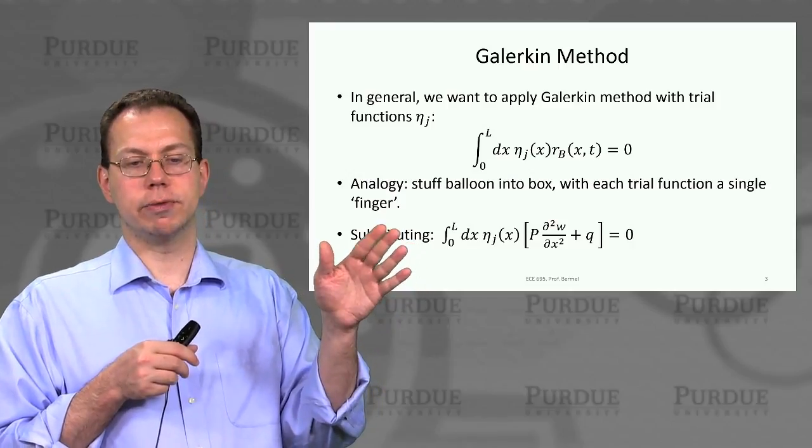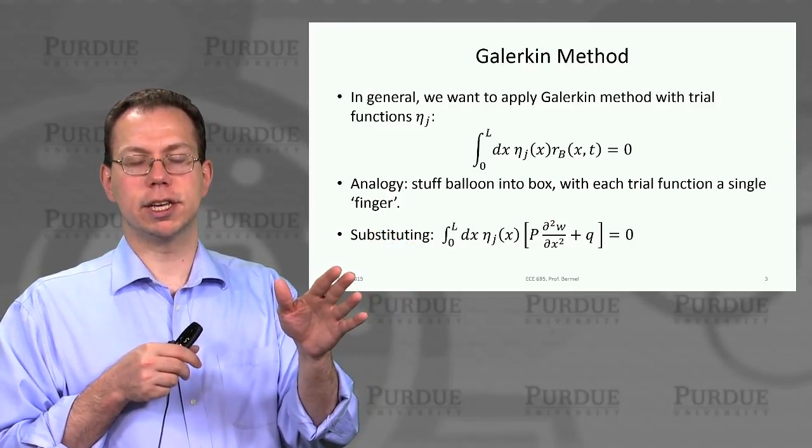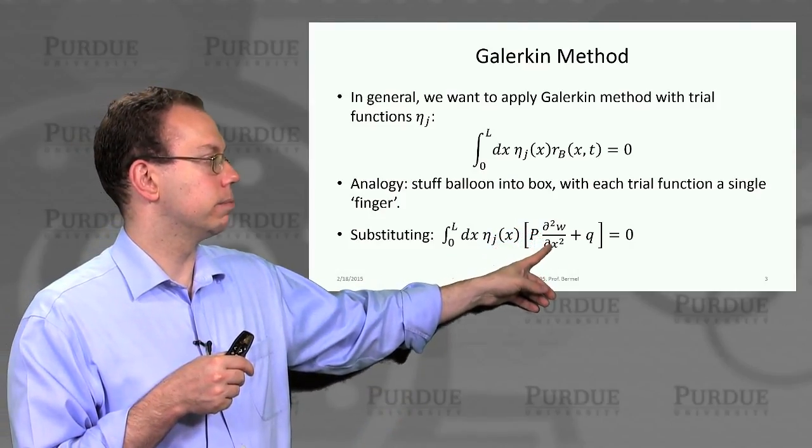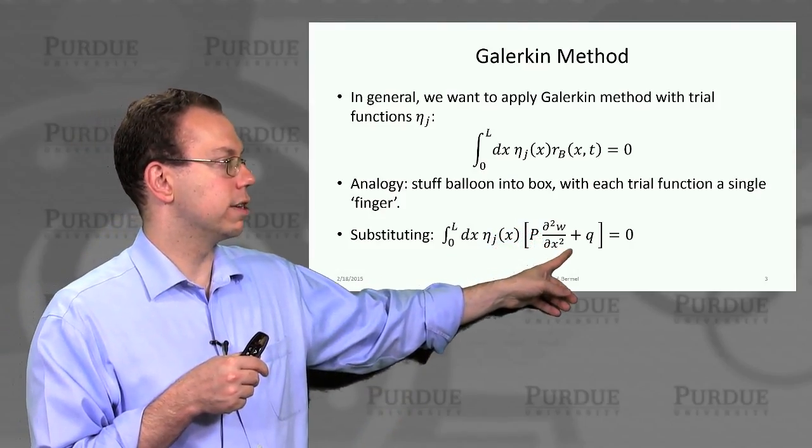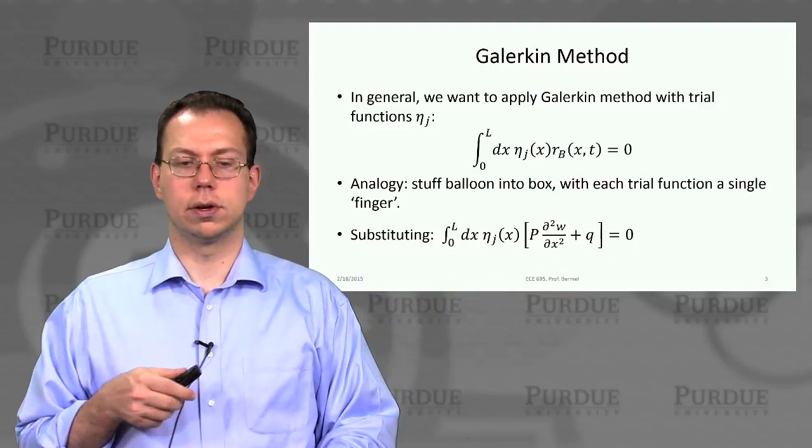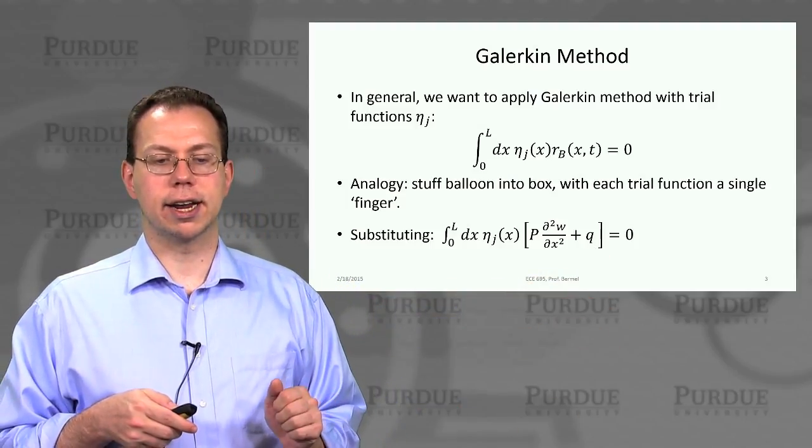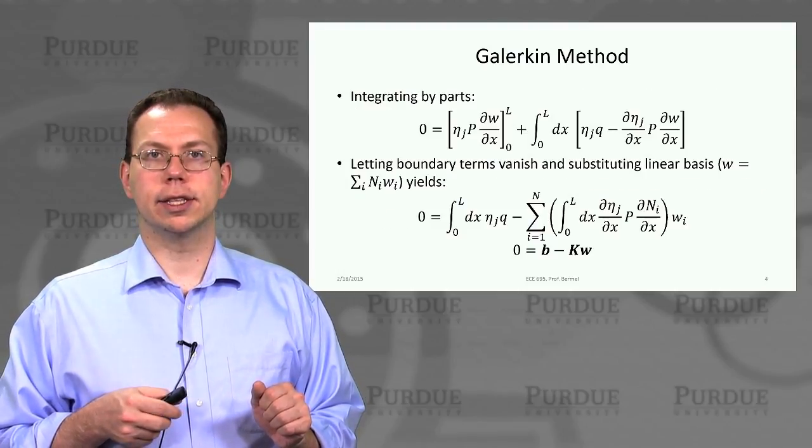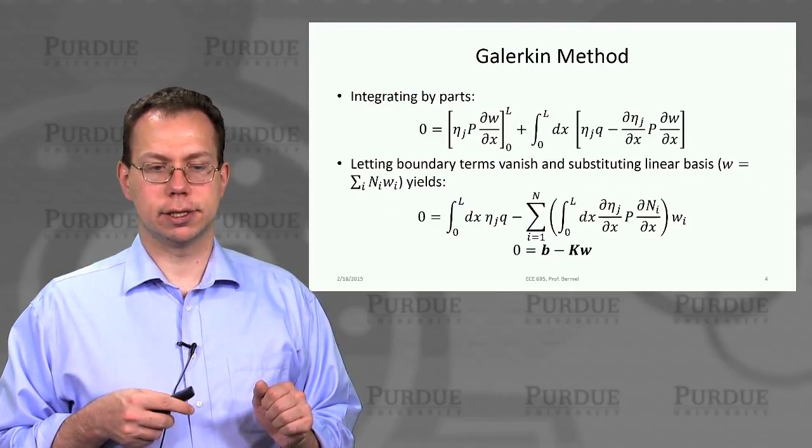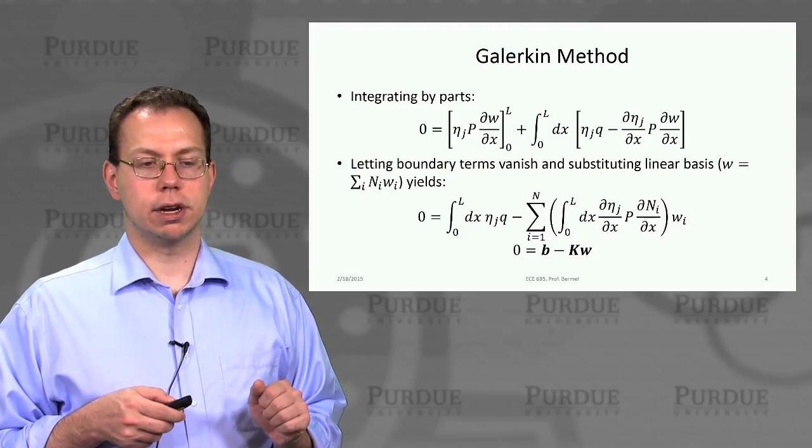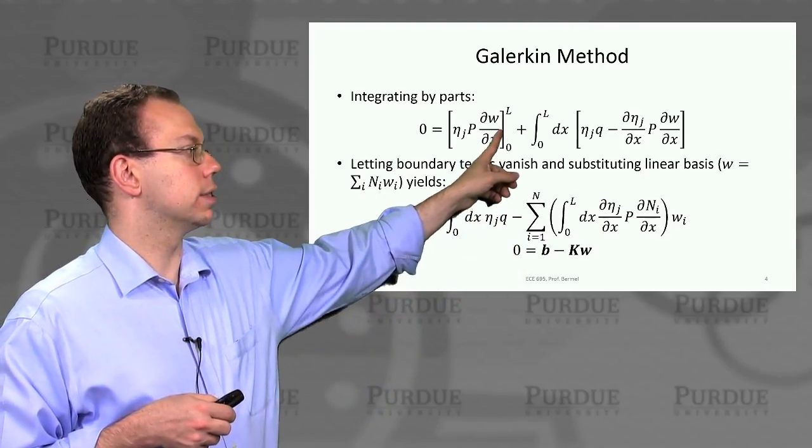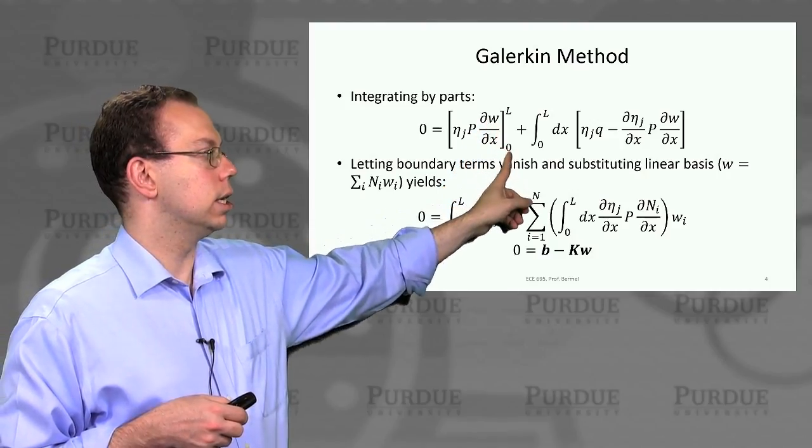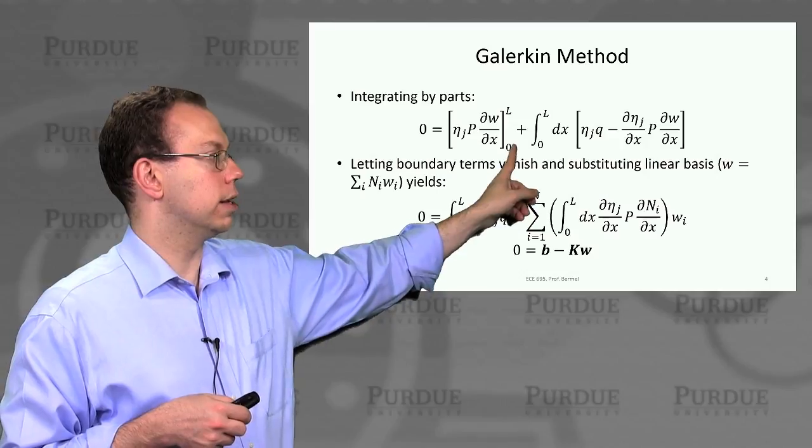Now we can write down the explicit form of the residual function, which for the static equilibrium problem was p times second derivative of w plus q. Q is the static force, p is the tension of the wire. We can integrate this expression by parts. That reduces the number of derivatives on w by 1. So we get eta j times p dw dx integrated from 0 to L.